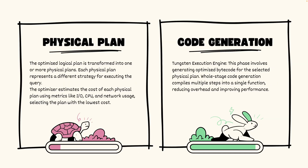This logical plan gets converted into a physical plan, and can actually be converted into more than one physical plan. The optimizer then chooses based on metrics like I/O, CPU, and network usage, selecting the plan with the lowest cost trade-off. This is a great advantage of Spark: more than one physical plan is generated and then optimized using cost optimization techniques based on those metrics.